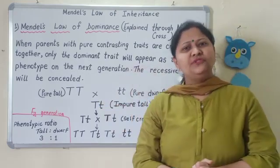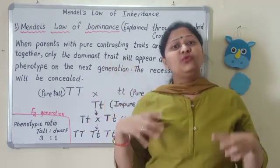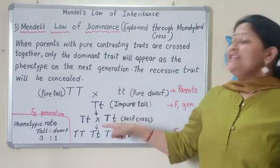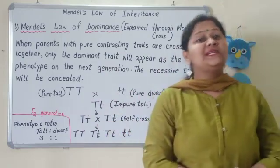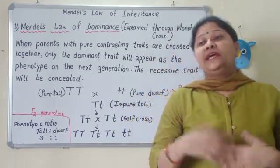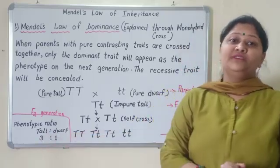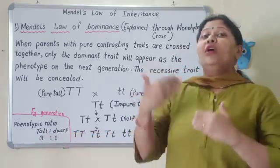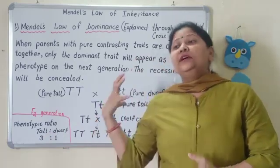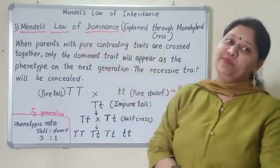Then Mendel was confused — where had the dwarfness gone? The pure dwarf parent was there in the P generation. Then Mendel again self-crossed, and in the F2 generation, what he observed was that the progeny came in the ratio 3:1 — three were tall and one was dwarf. So the dwarfness reappeared in the F2 generation.